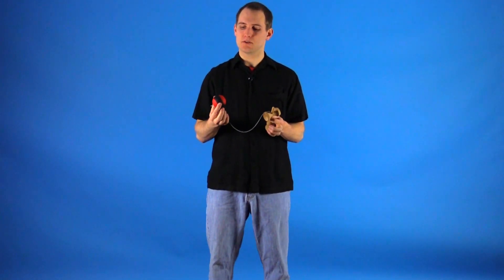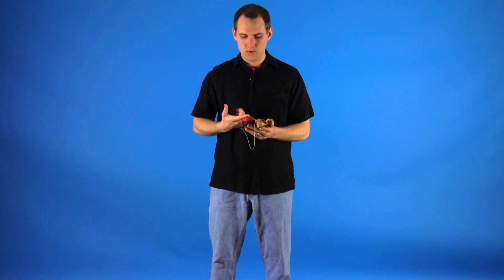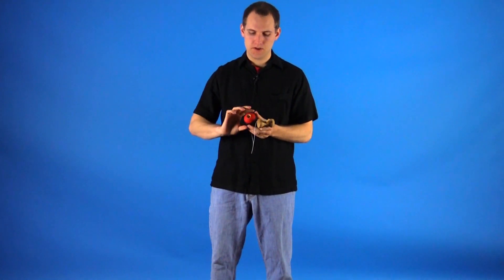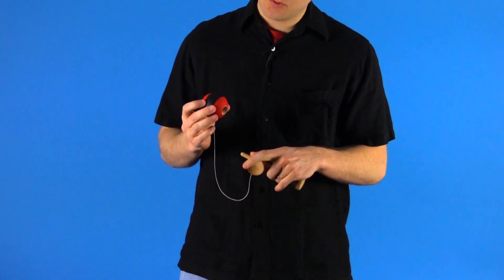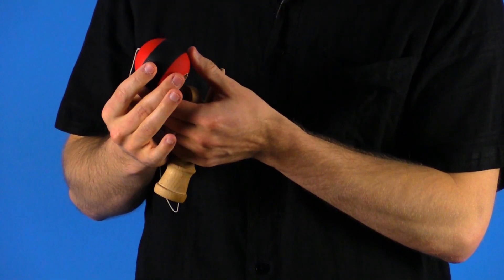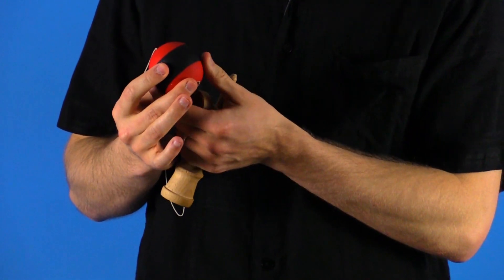So to do this trick you are going to start off by holding the Kendama in a modified Tama grip. This time, where we normally have the hole facing upward, we are going to turn it upside down so the hole is facing down, and you want your ring or middle finger right next to the hole on the Tama.